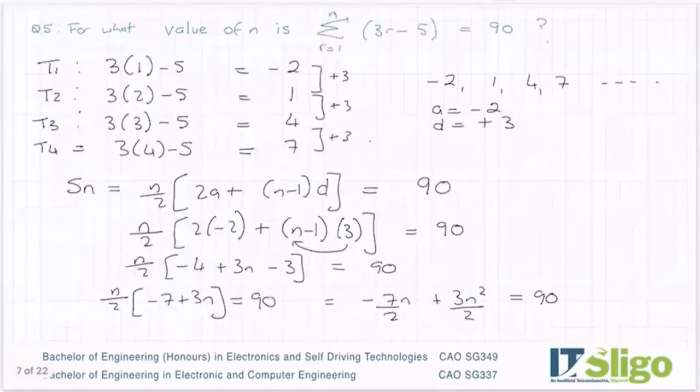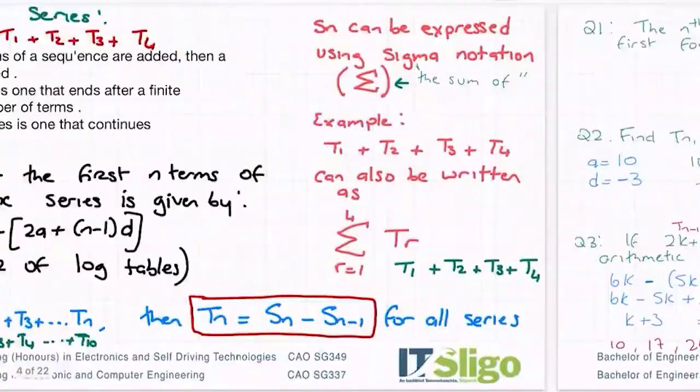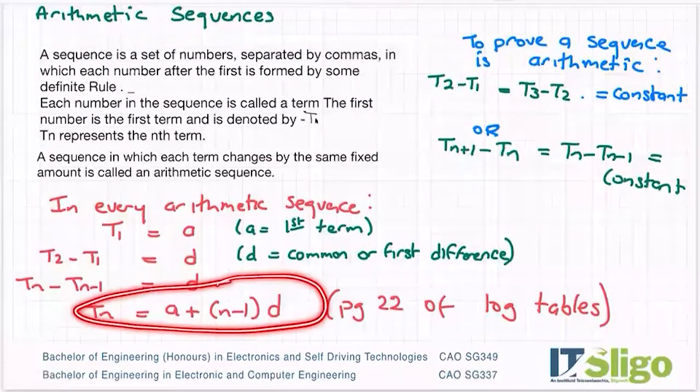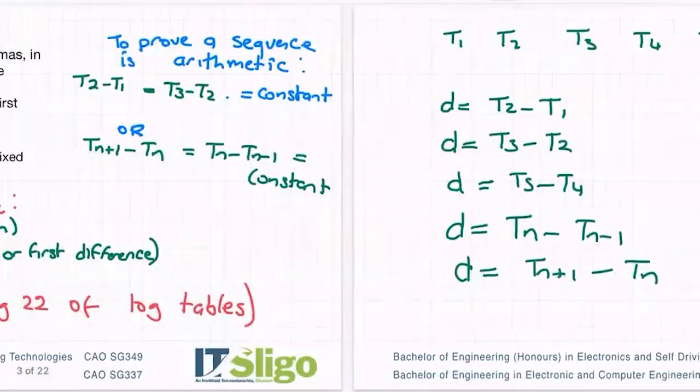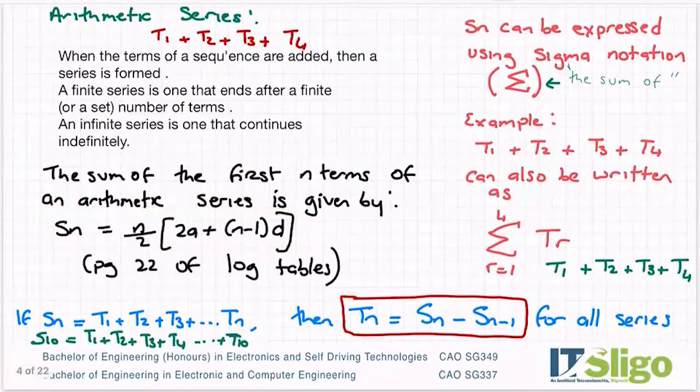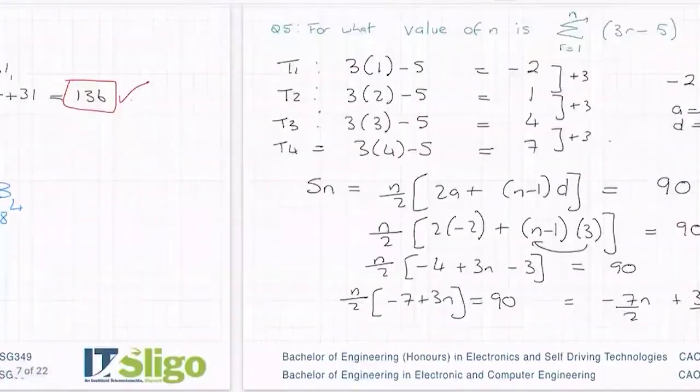If we go back to the theory we did last day, we can then use our tn formula that we established—it's on page 22 of the log tables—and of course we can use the sn formula that we also did in the last class. That's the linear sequence.